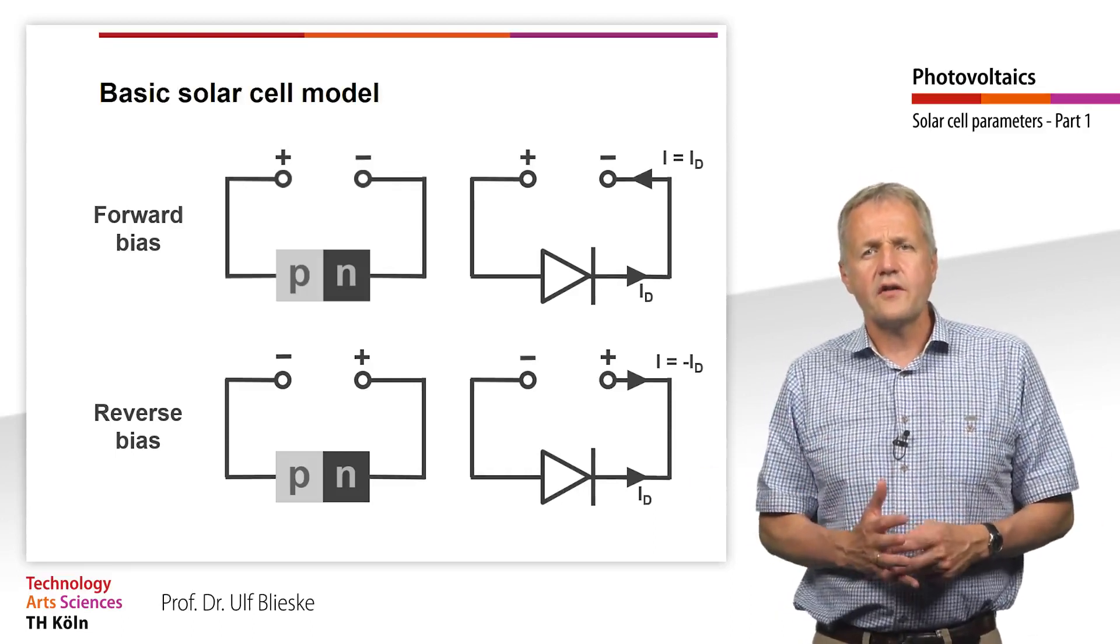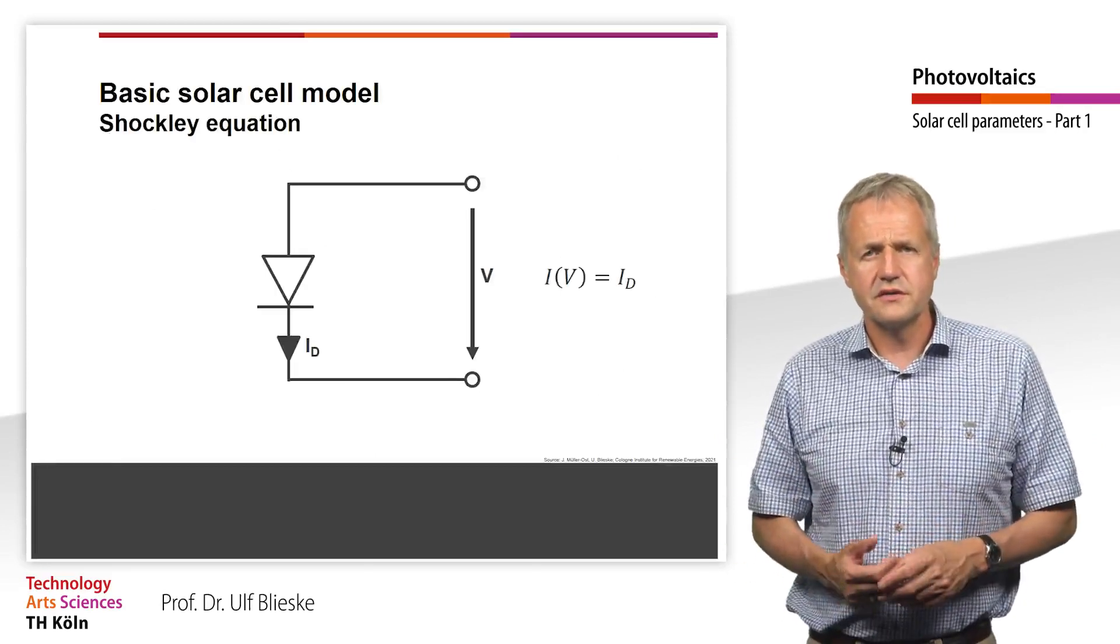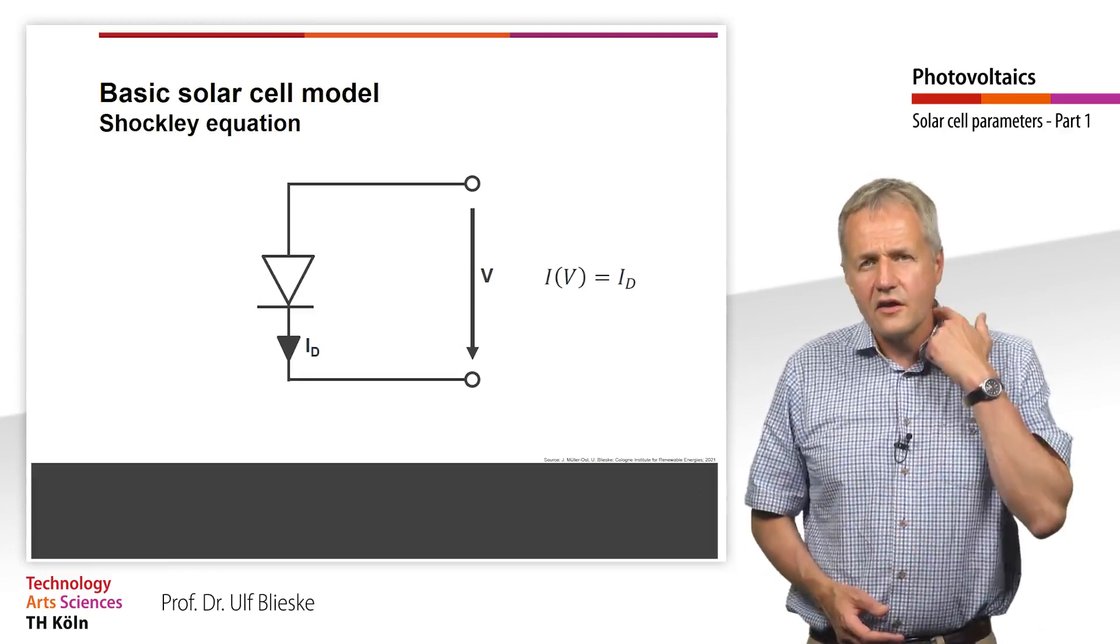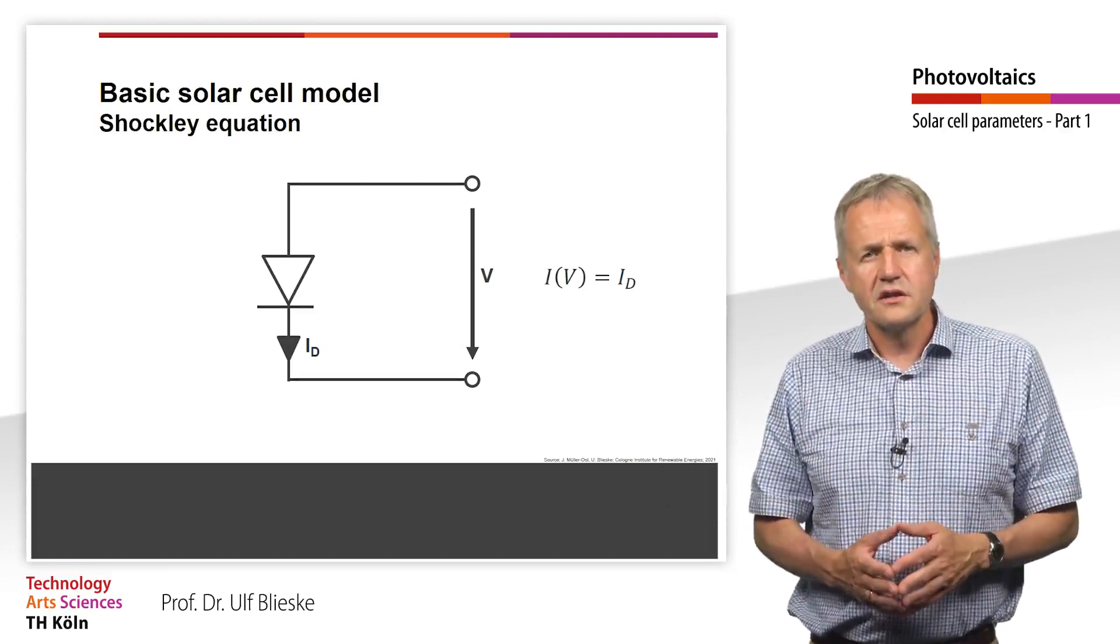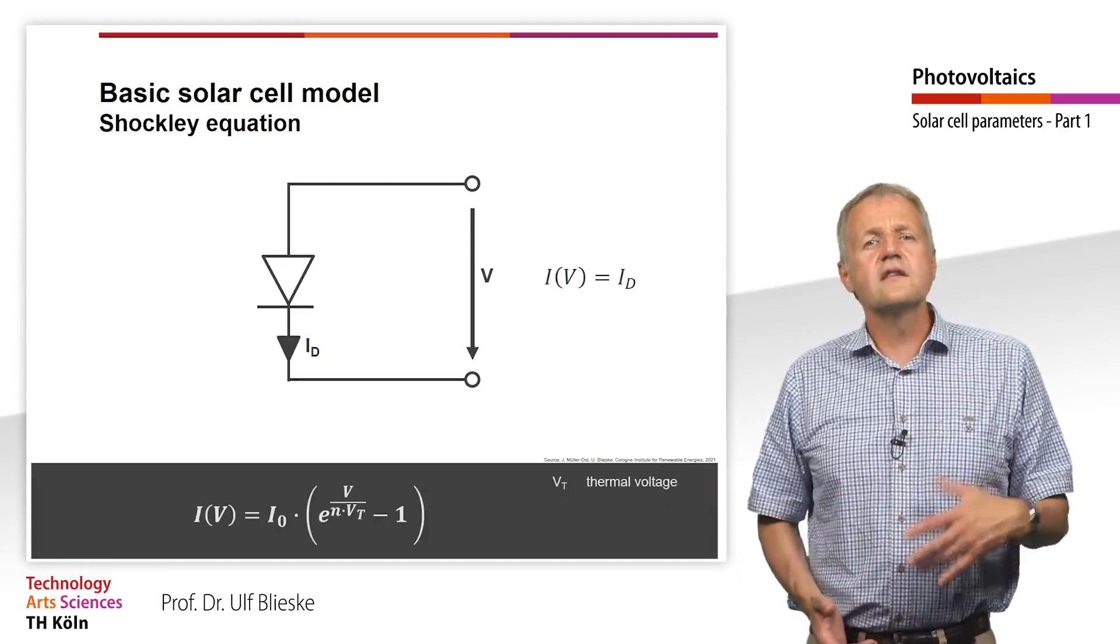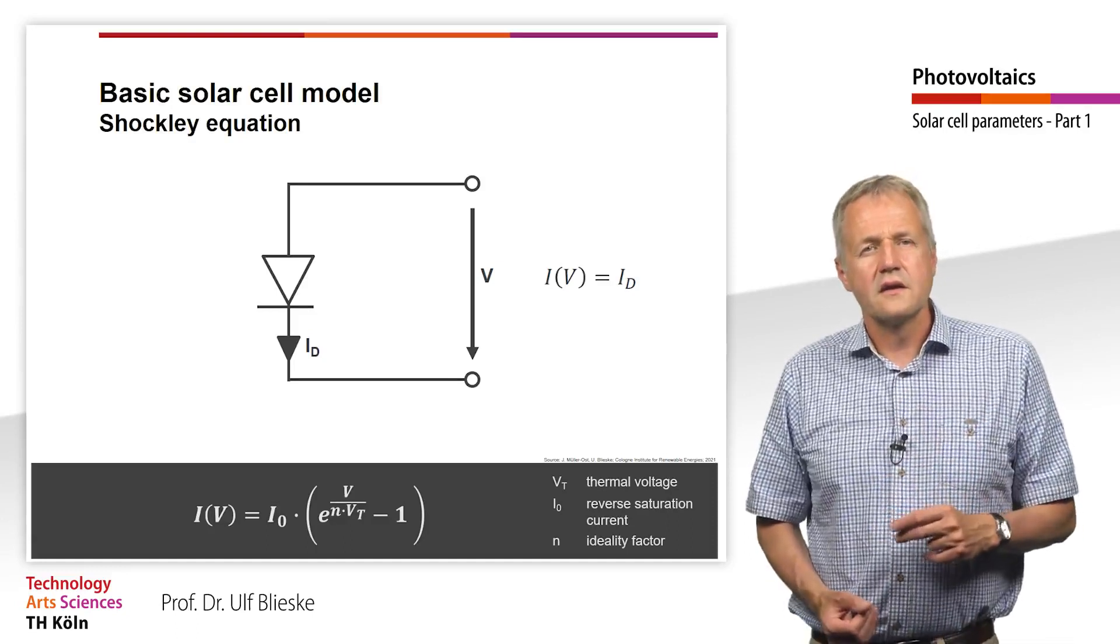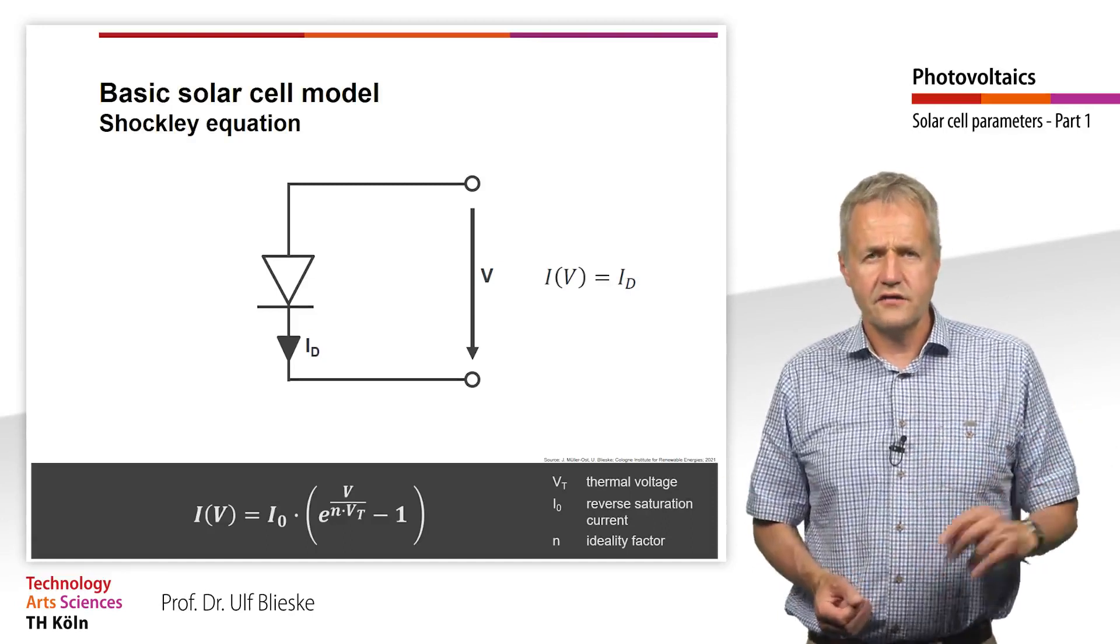The electrical behavior of a diode can be described using the so-called Shockley equation. This equation describes the dependence of the current through a diode on the applied voltage. J0 is the reverse saturation current density, Vt the thermal voltage, and N the ideality factor.